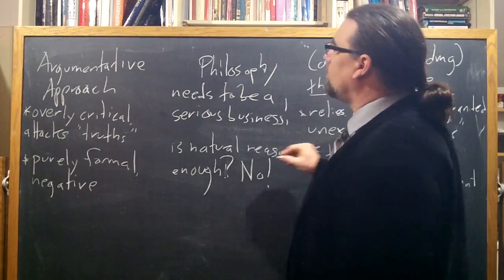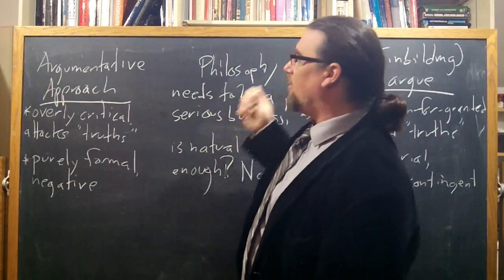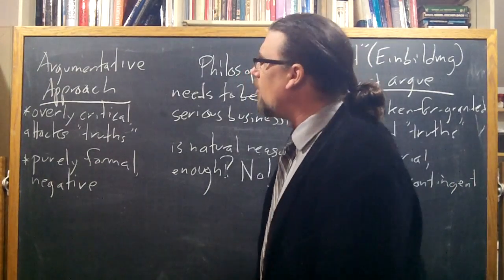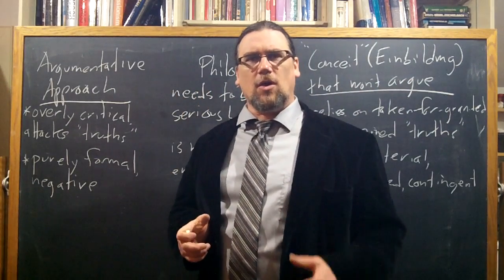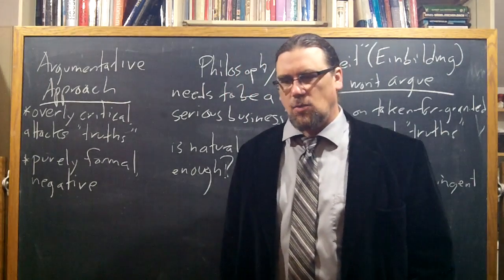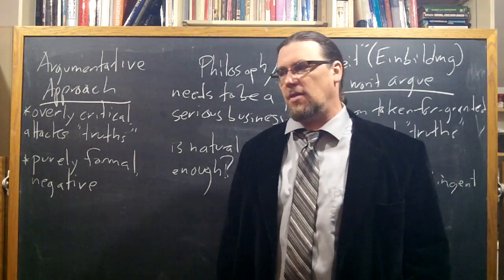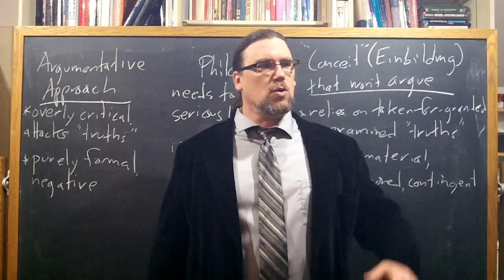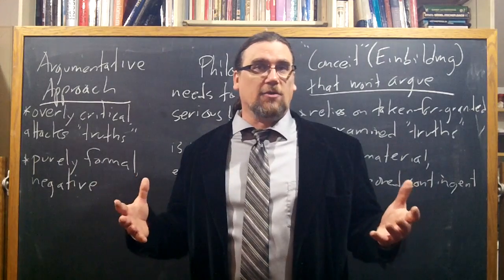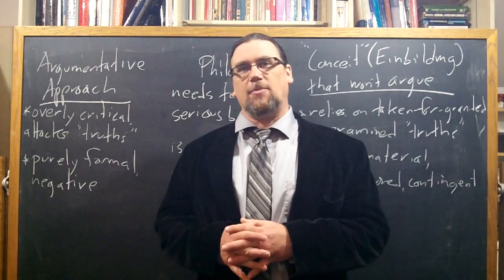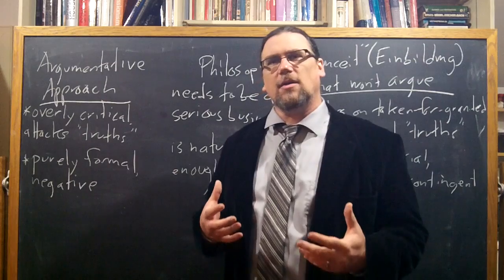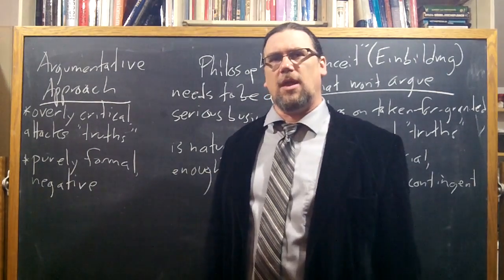We've got the argumentative approach, and we've got the conceit that will not argue. We've looked a lot at the argumentative approach already, we don't need to say an awful lot more about it. It's overly critical, it's taking advantage of the fact that subjectivity is in fact negativity, the fact that the world is not a completely finished product, the fact that we can look at things from multiple perspectives to tear things down, to say that's not any good.